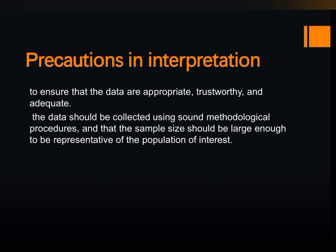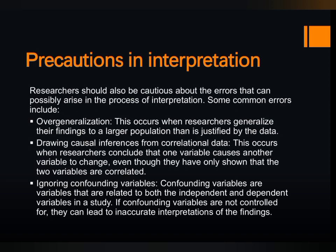Researchers must select a sample size that is large enough so that they will get accurate results. Researchers should also be cautious about errors that can possibly arise in the process of interpretation. Some of the errors include overgeneralization, drawing causal inferences from correlational data, and ignoring confounding variables.